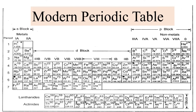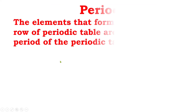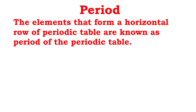Today I am going to talk about the period of the periodic table. We can define period like this: the elements that form a horizontal row of the periodic table are known as a period of the periodic table.